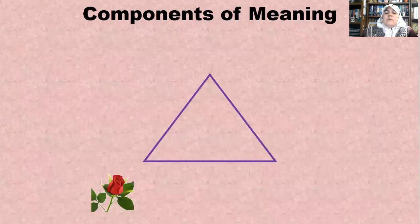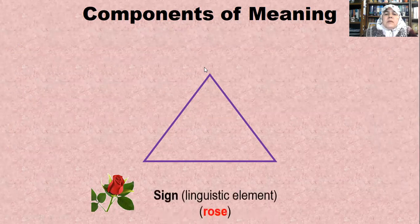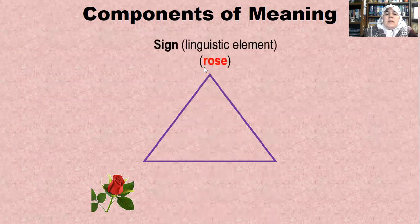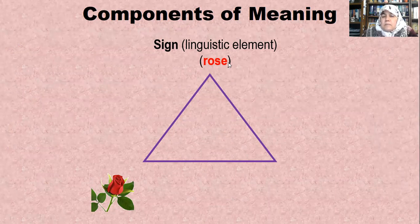When we come to the components of meaning, the first component is the sign, which is the linguistic element. For example, 'rose' — R-O-S-E — or 'juri' in Arabic, written as jim, waw, ra, ya.